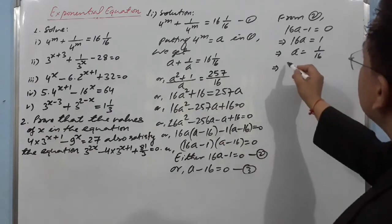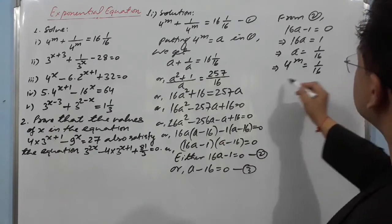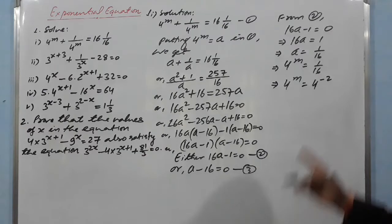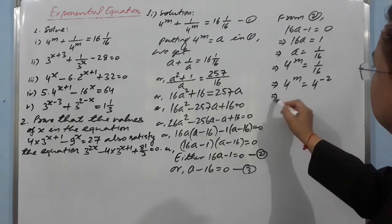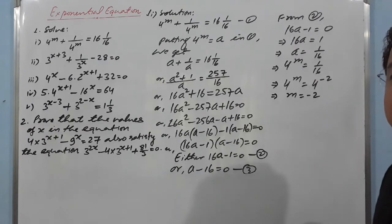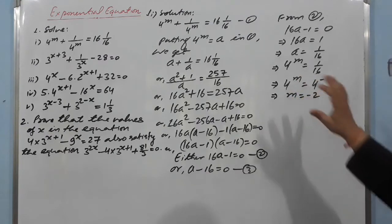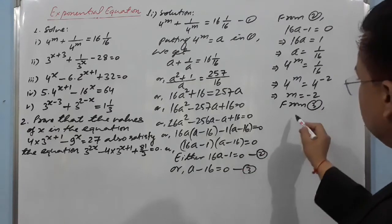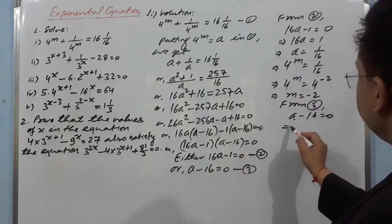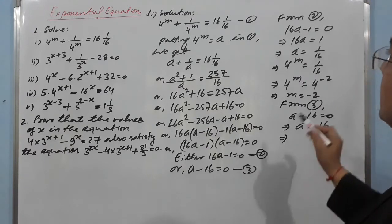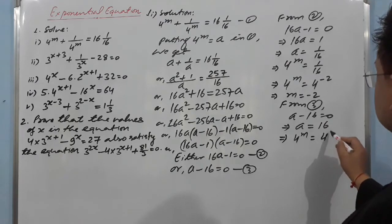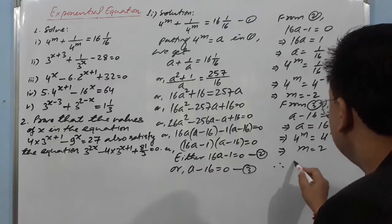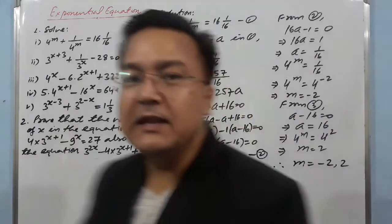We need to convert: 1/16 = 4^(−2), so 4^m = 4^(−2). By the law of indices, since bases are the same, powers must be equal, so m = −2. From the second case: a − 16 = 0 gives a = 16, and since a = 4^m, we write 4^m = 4², so m = 2. Therefore m = −2 or m = 2.